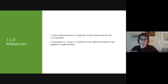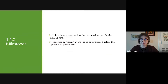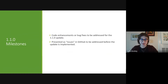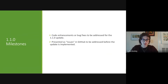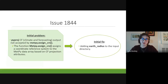Most of my work this summer has been dedicated to understanding and addressing some of the different milestones to be done before the 1.1 update. These milestones are essentially code enhancements or bug fixes that need to be addressed before the new update. They're introduced in GitHub as various issues brought to attention by different users or developers, and they basically represent the different ways it is desired to function that it is not currently functioning. I studied a few of these different issues throughout the summer, but the one that took up the majority of my time was the first one I looked at: issue 1844.